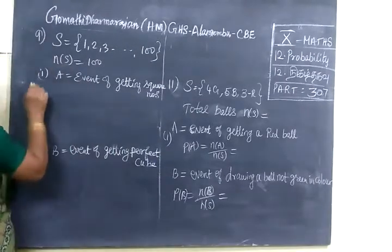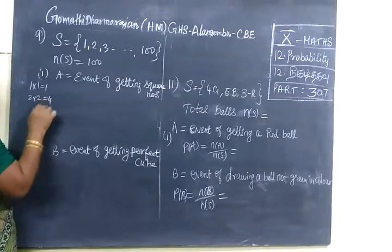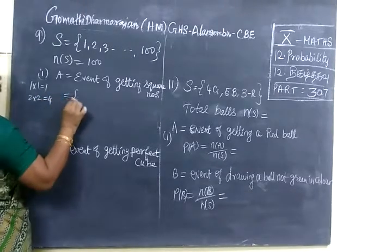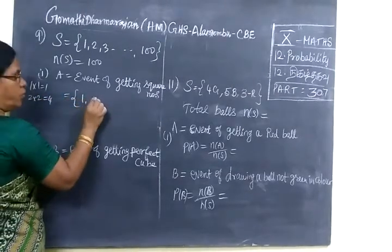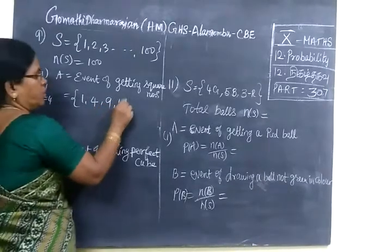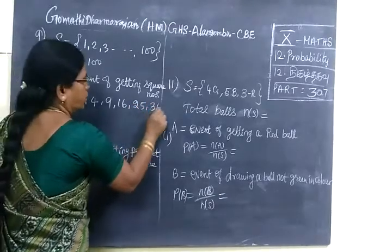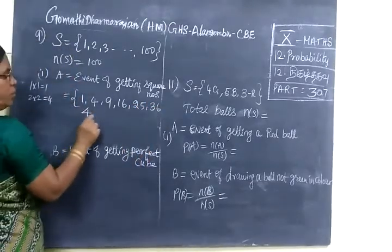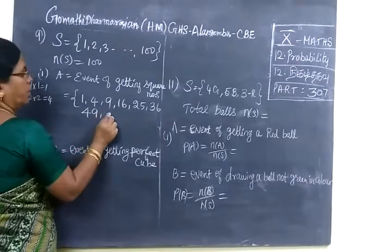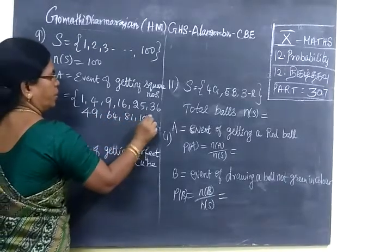Square number means 1 into 1 equals 1, 2 into 2 equals 4. Like that we write: 1, 4, 9, then 4 into 4 equals 16, 5 into 5 equals 25, then 36, 7 squared equals 49, 8 squared equals 64, 9 squared equals 81, 10 squared equals 100.